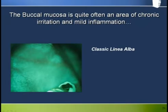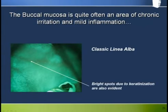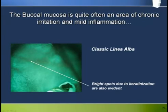Buccal mucosa is quite often an area of chronic irritation and mild inflammation. Here we see a fairly classic presentation of linea alba under Velscope. Under white light, you can see a white line corresponding to keratinized tissue right along the bite line. This can sometimes show up as a bright line under Velscope due to keratin fluorescence, but more typically appears with the associated mild inflammation dominating and showing the area as predominantly dark.